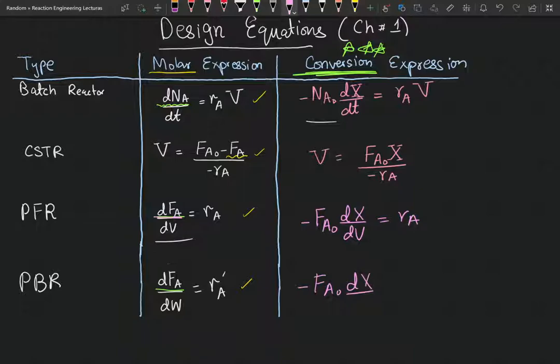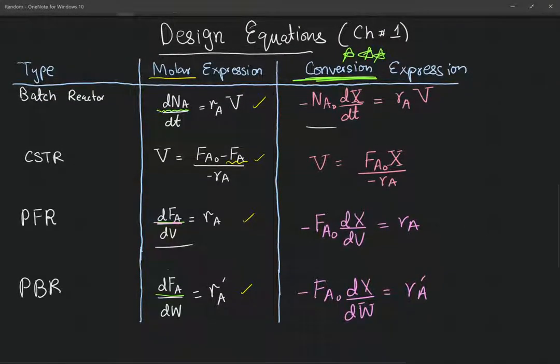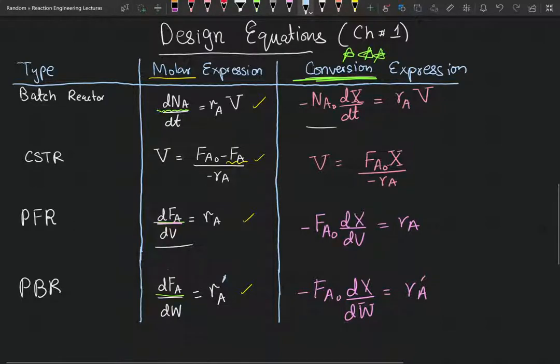Now you can see that the design equations for the PBR and the PFR are similar. The only difference is the reaction rate, you have a prime here, and instead of a volume here, you have a weight. Because the PBRs are usually, the sizing parameter for PBRs is usually the weight of the catalyst, which is why we're using W instead of V. And r_A prime is reaction per weight of catalyst rather than reaction per volume. So we're gonna go over PBRs in a separate video. For now, we have our design equations. We have our design equations in terms of conversion.